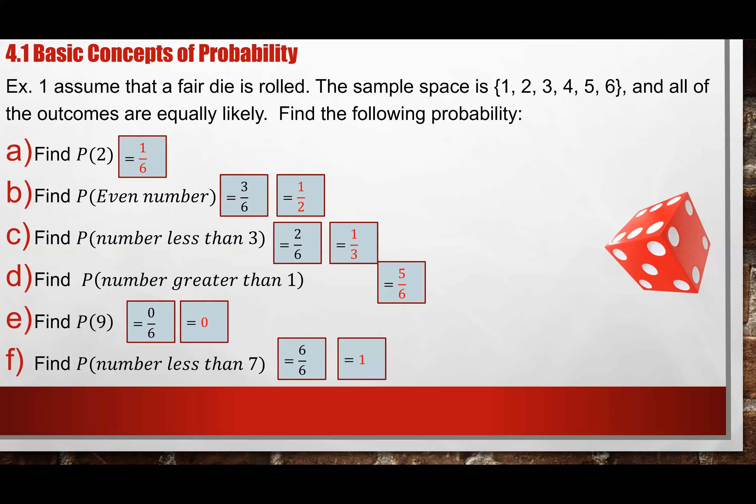So most of the time probability is between zero and one. If it's impossible, it's zero, and if it's certain, it's one.